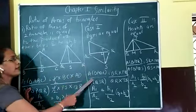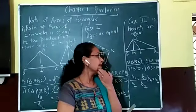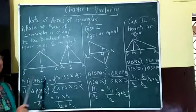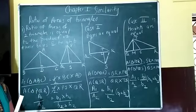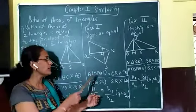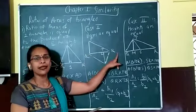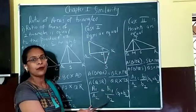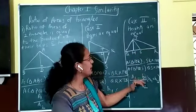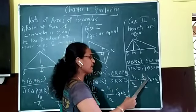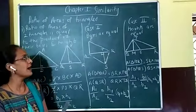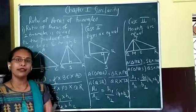These are the three basic properties on which the first practice set is based. To summarize: if triangles have different bases and heights, A1 upon A2 equals B1 times H1 upon B2 times H2. If two triangles share a common base, A1 upon A2 equals H1 upon H2. If two triangles share a common height, A1 upon A2 equals B1 upon B2. In the next video, we are going to start with the first practice set 1.5. Thank you.